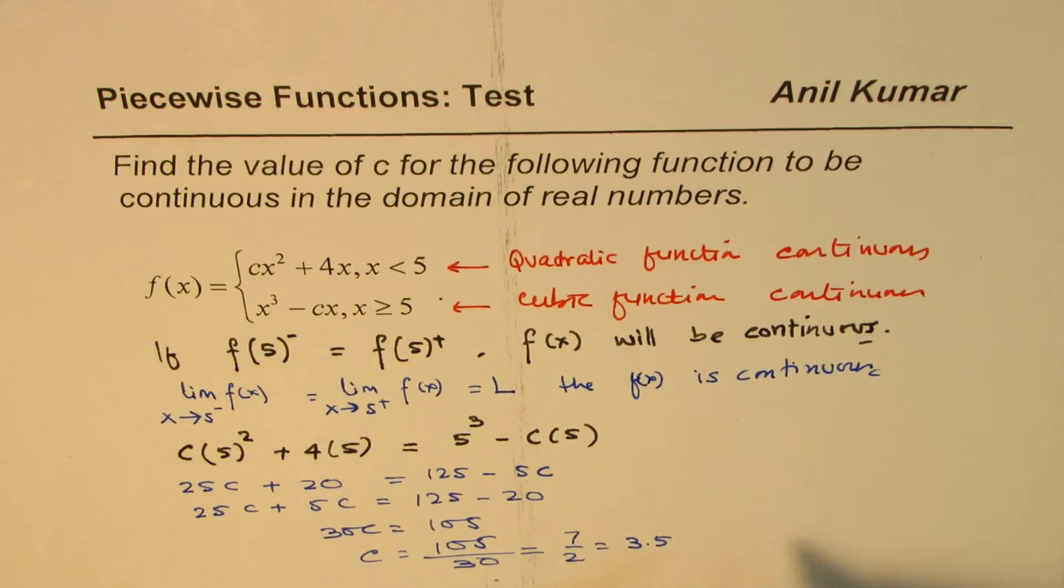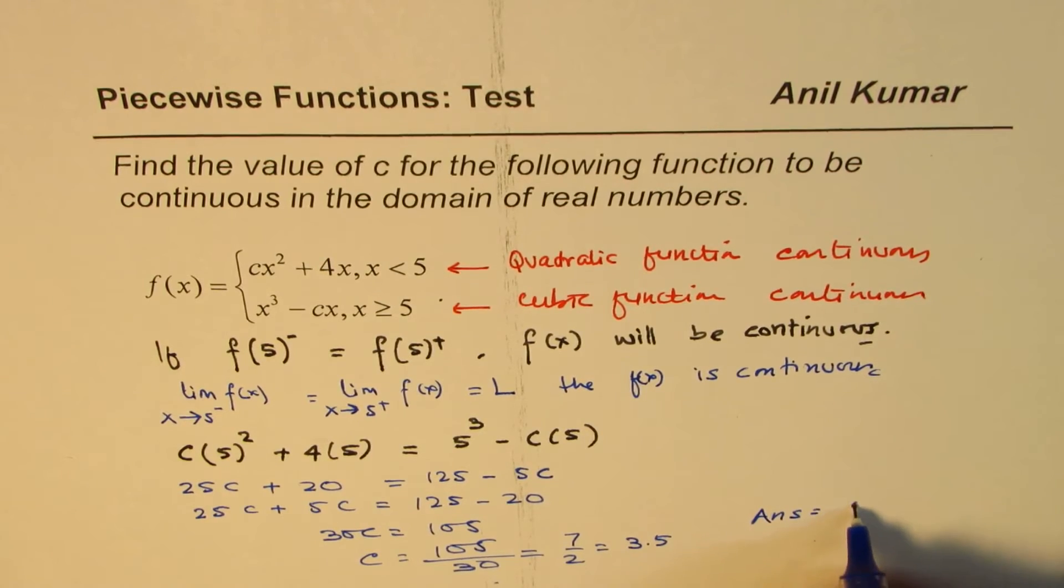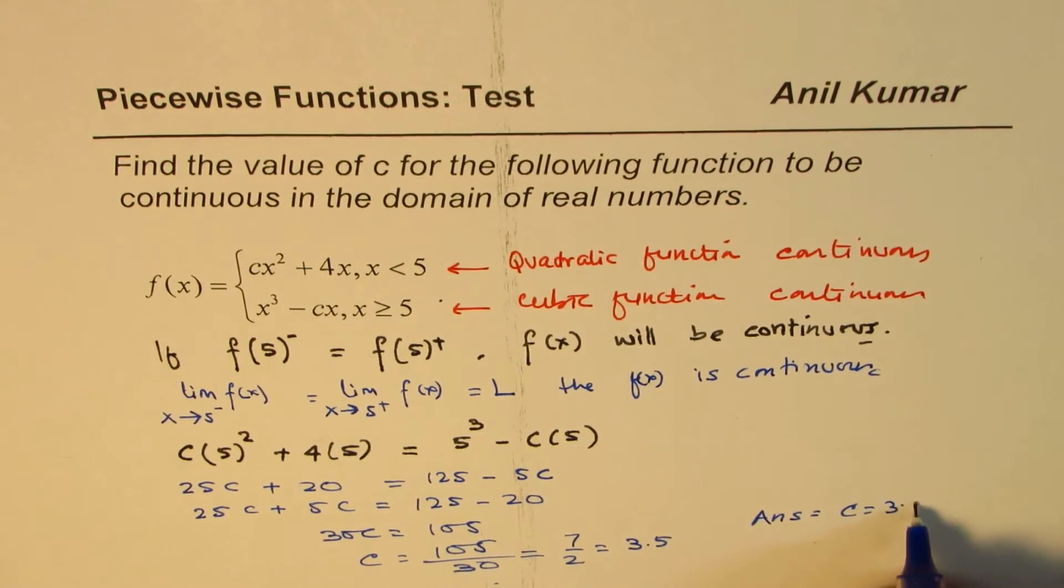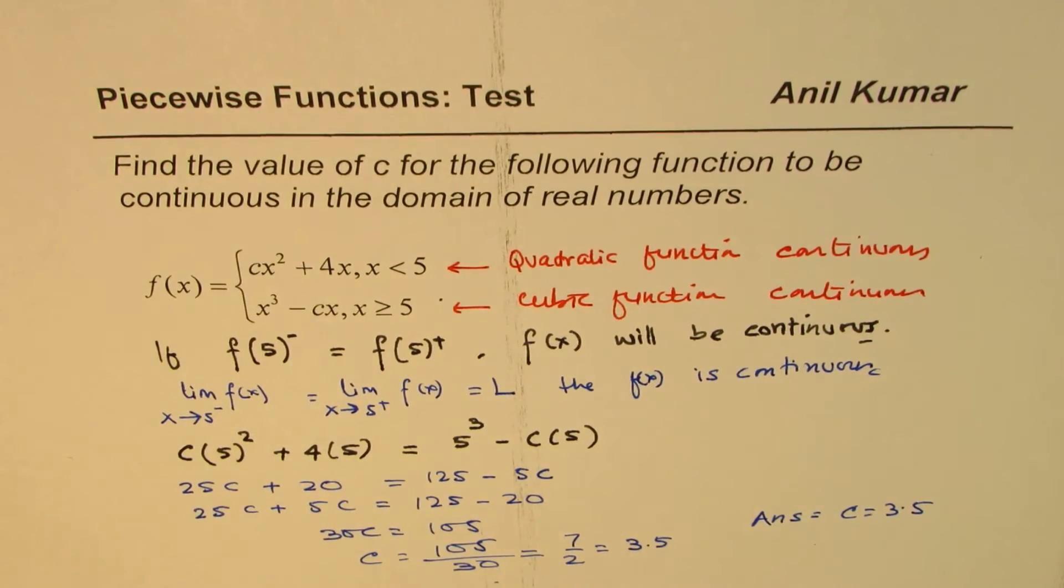So you can write this as 7 over 2 or 3.5. So the answer is c equals 3.5. That is how you could solve such questions on piecewise functions.